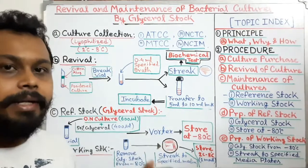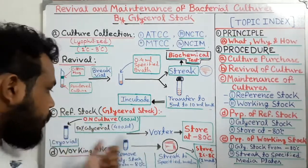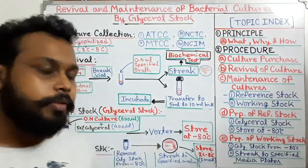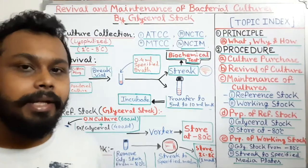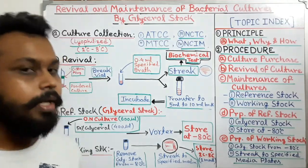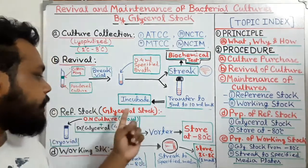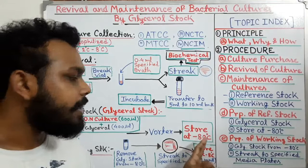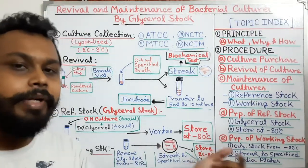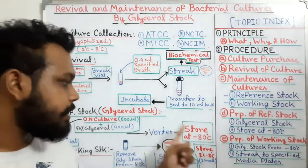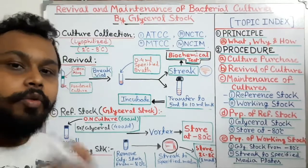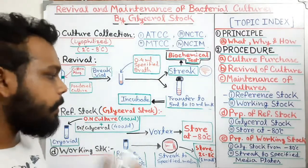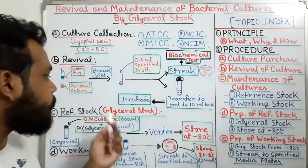Each month we will take one cryovial of glycerol stock and use it for preparing the working stock. For example, if we want to use our bacterial culture for two years — 24 months — we prepare 24 reference glycerol stocks, store them all at minus 80°C, and every month take one glycerol stock to prepare our working stock for that month.